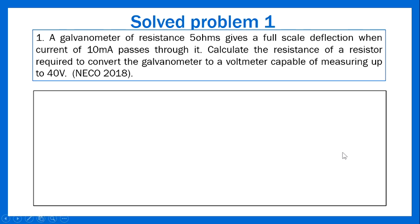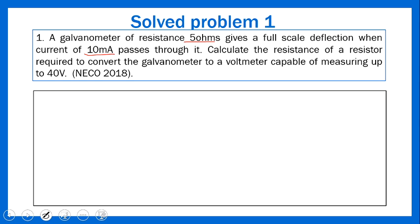Question 1: A galvanometer of resistance 5 ohms gives a full-scale deflection when a current of 10 milliampere passes through it. Calculate the resistance of the resistor required to convert the galvanometer to a voltmeter capable of measuring up to 40 volts.